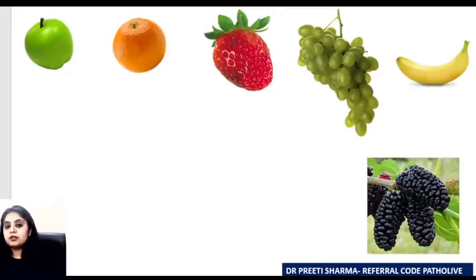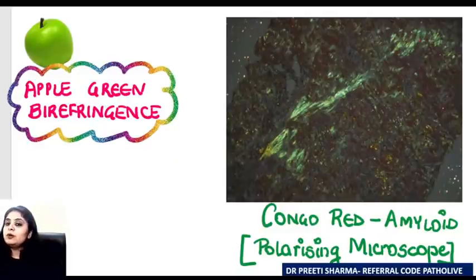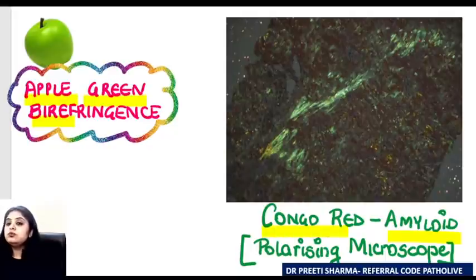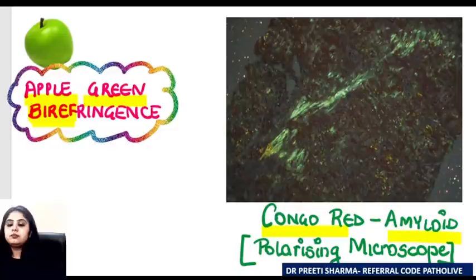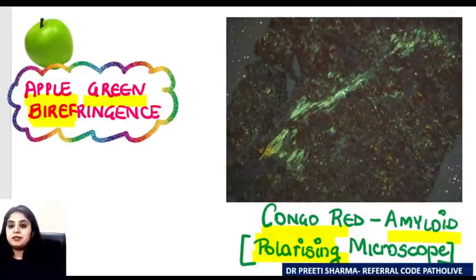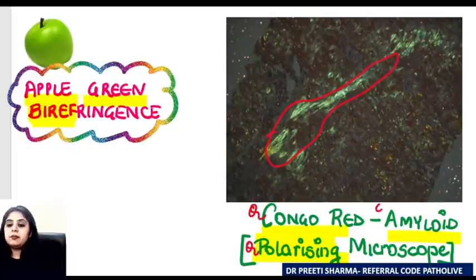Now let's discuss fruits and their similarities in pathology and microbiology. First, the green apple reminds us of apple green birefringence — one of the most famous questions in pathology. Apple green birefringence is the description we give for amyloid when we use the Congo red stain. Birefringence means different refractive indices, and to appreciate this you need a polarizing microscope. So: apple green birefringence, polarizing microscope, Congo red stain, and amyloid is the material.